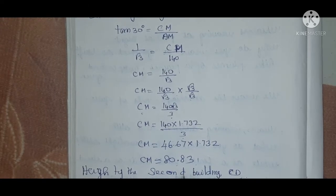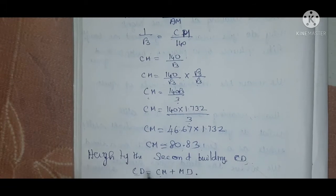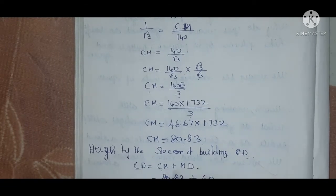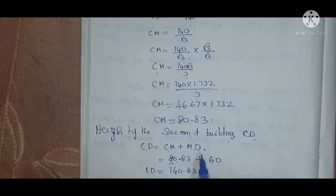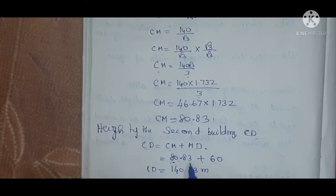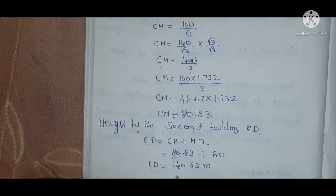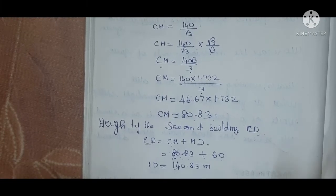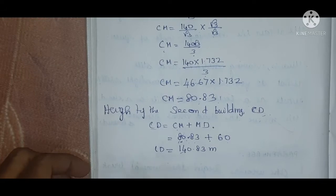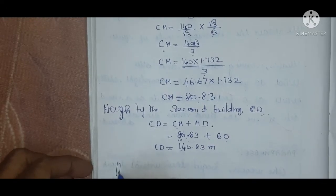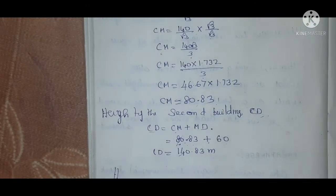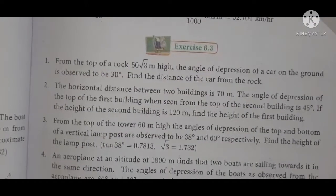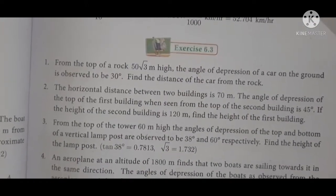Height of the second building: CD = CM + MD. CM = 80.83 meters, MD = 60 meters. So CD = 80.83 + 60 = 140.83 meters. Therefore, the height of the second building is 140.83 meters. Now we move on to Exercise 6.3, sum number 1.